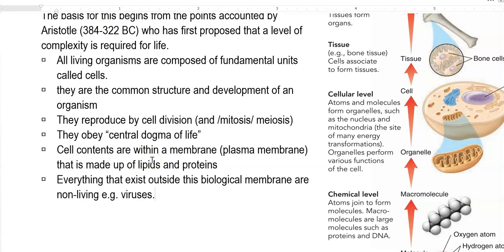Cell contents are enclosed within a membrane. Whatever is present inside the cell is bounded by a membrane called the plasmalemma, plasma membrane, or cell membrane. This plasma membrane is made up of lipids and proteins, and is universal in all organisms — from bacteria and archaea to eukaryotic plant and animal cells. Every cell has this delimiting membrane.